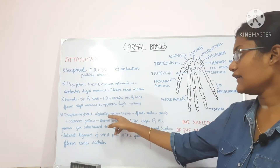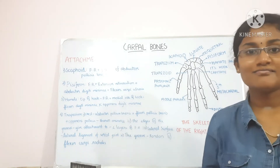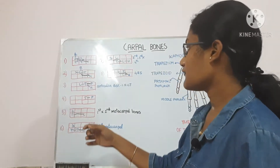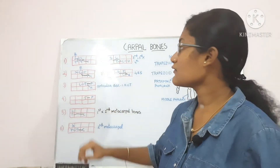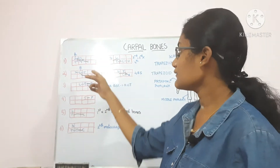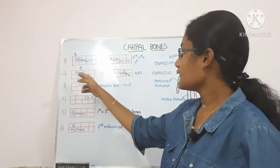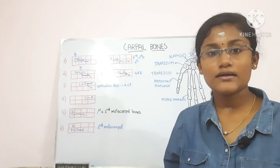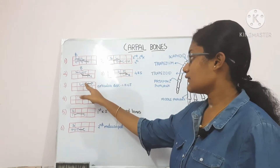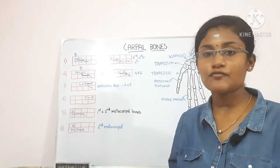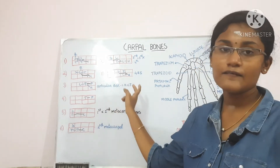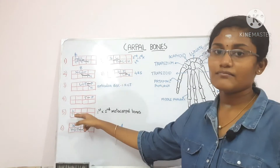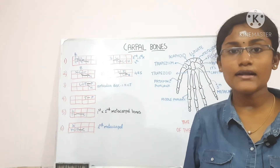The crest gives attachment to the three muscles which form the thenar eminence. Now let's talk about the articulations of the carpal bones. The scaphoid bone articulates with the radius, lunate, trapezium, trapezoid and capitate. The lunate bone articulates with the radius, scaphoid, triquetral and hamate. The triquetral bone articulates with the lunate, pisiform, hamate and the articular disc of the inferior radioulnar joint. The pisiform bone articulates only with the triquetral.